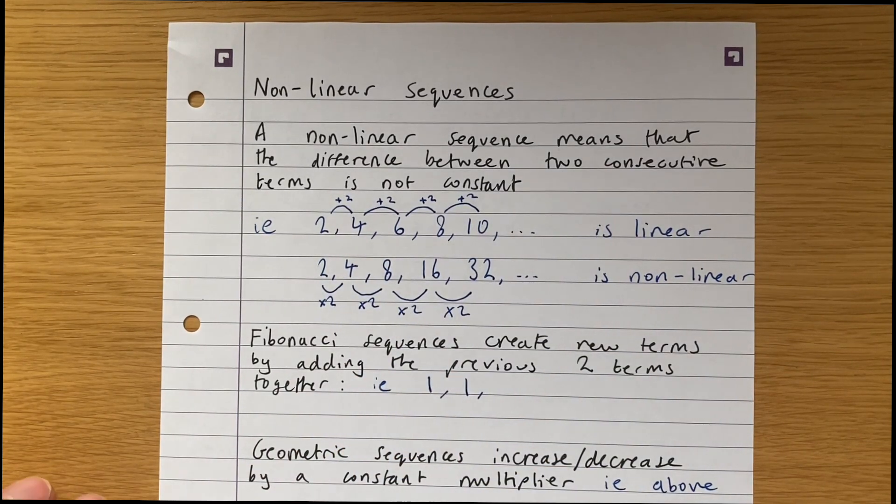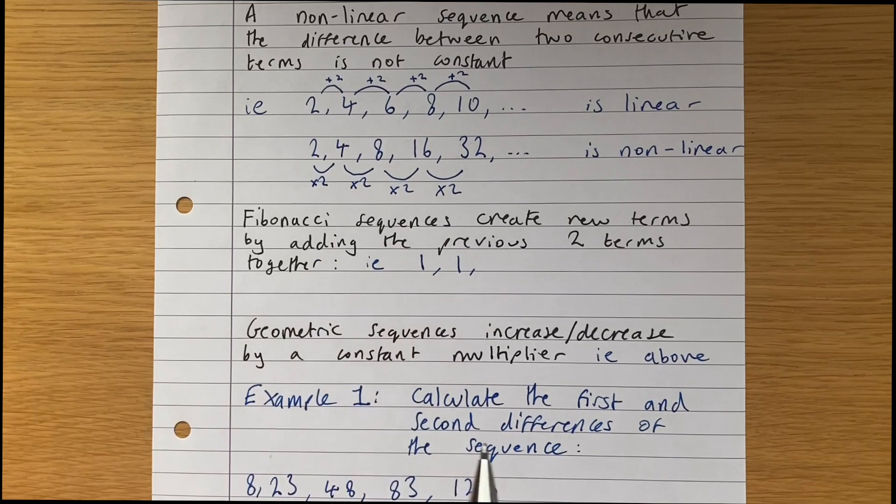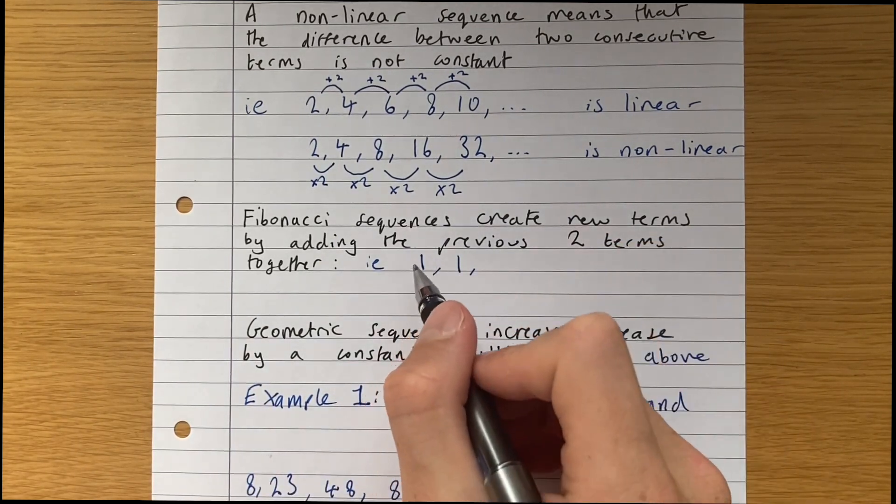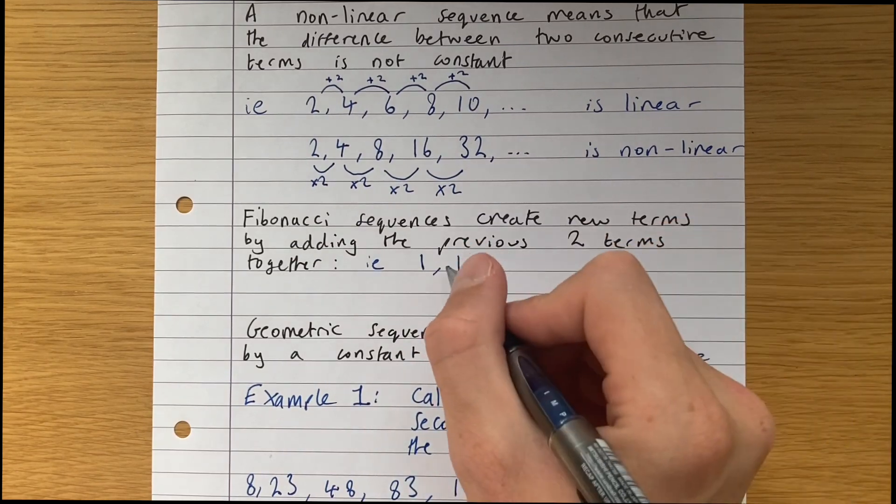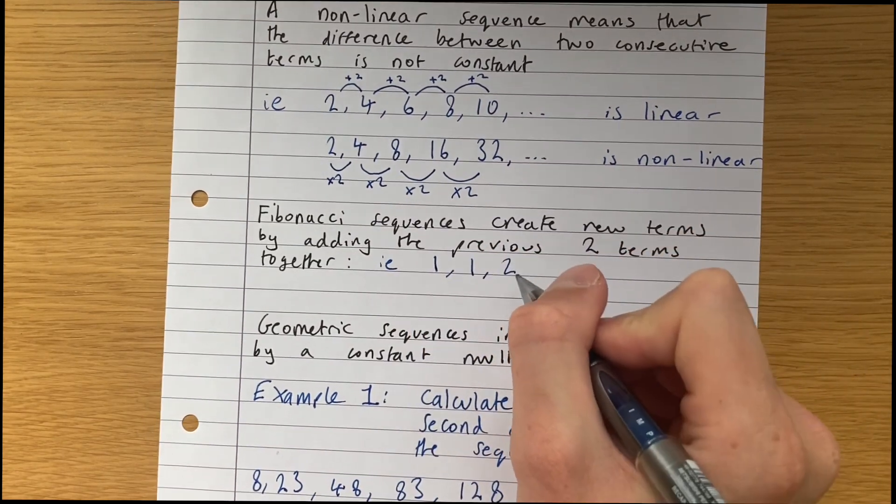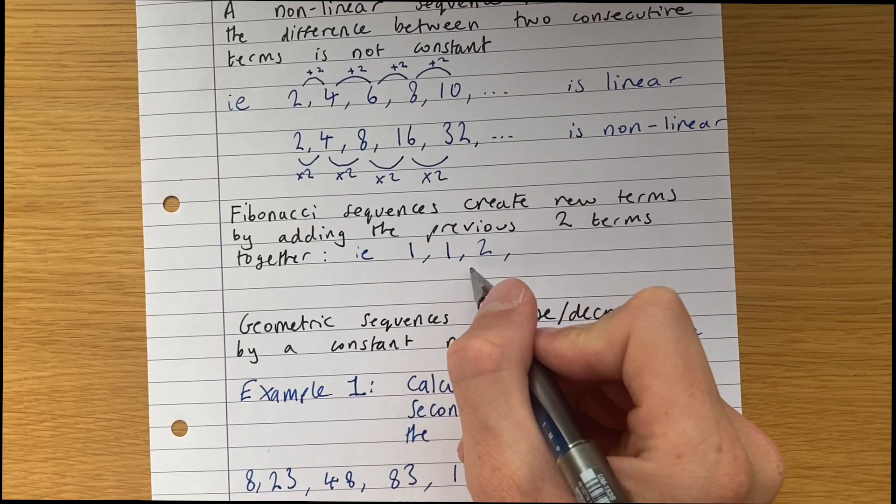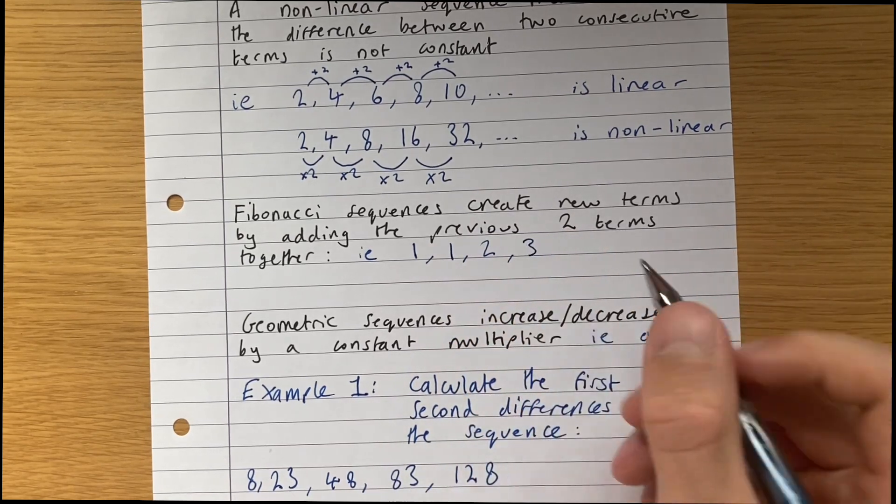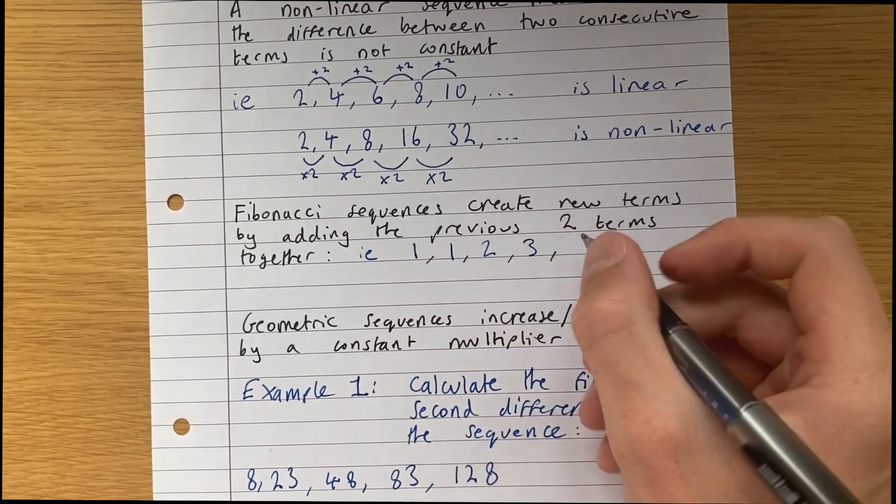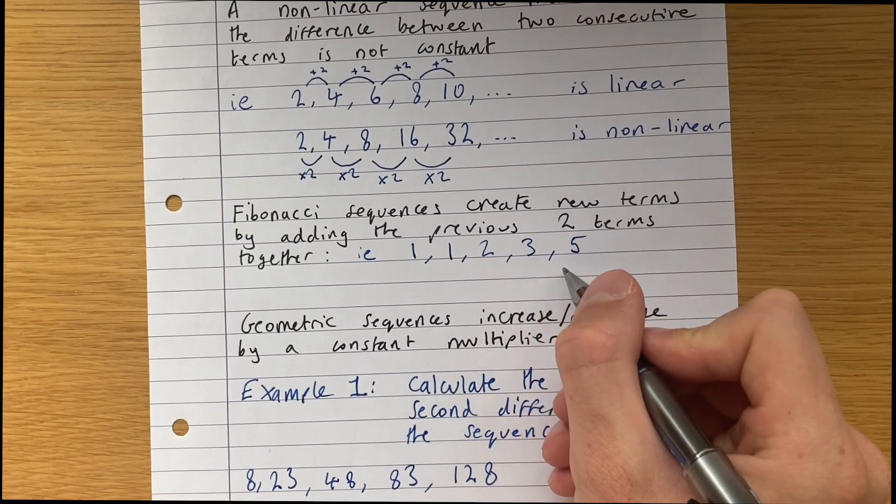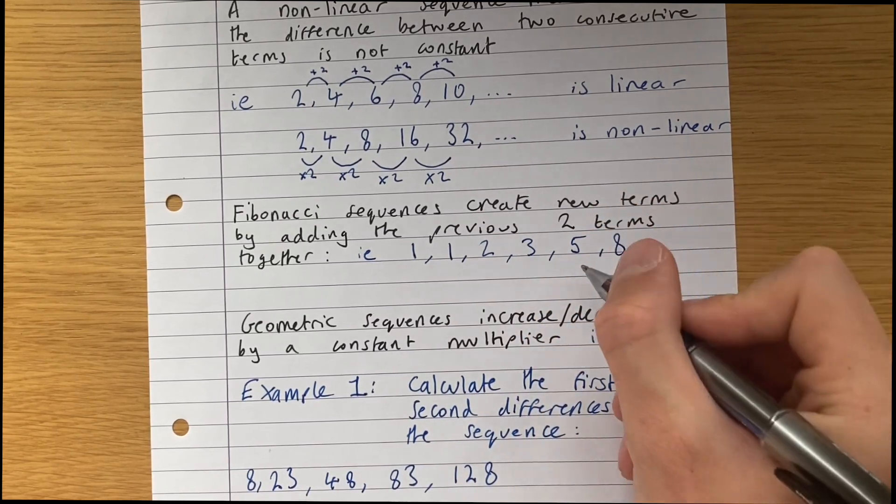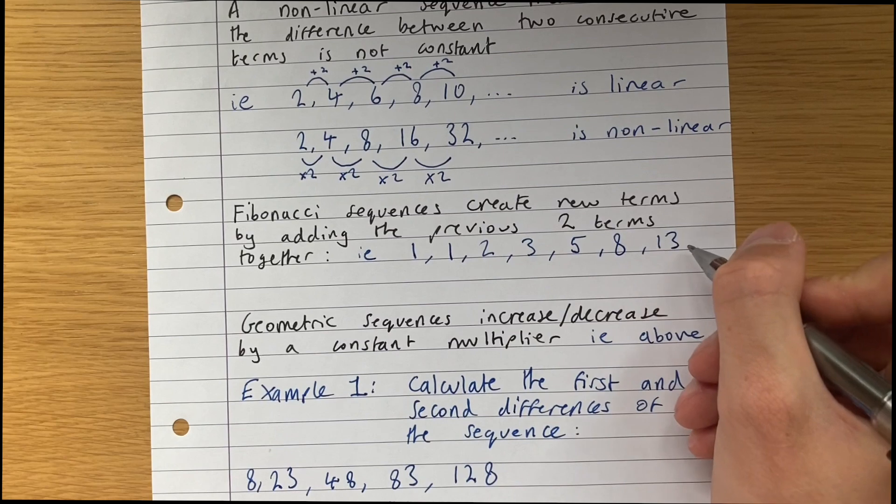Some examples of nonlinear sequences: Fibonacci sequences create new terms by adding the previous two terms together. So if we're starting here we have 1, 1, 1 plus 1 is 2, 1 plus 2 is 3, 2 plus 3 is 5, 5 plus 3 is 8, 5 plus 8 is 13 and so on.